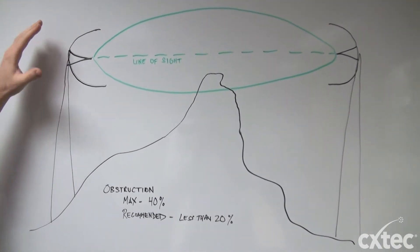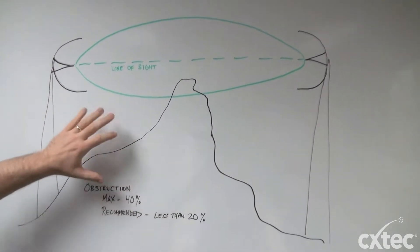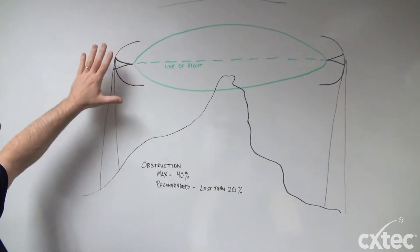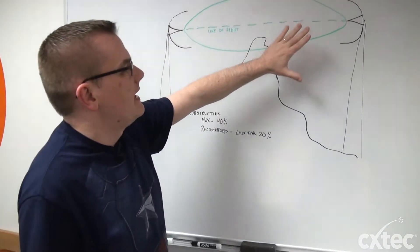This diagram here pretty much describes what the drive of this is today. Here you'll see there's two antennas crudely drawn, I apologize, with a mountain in the middle and here is the example of the Fresnel Zone.